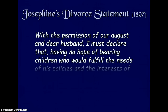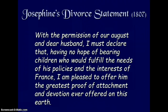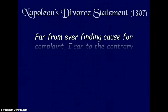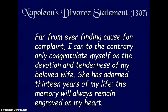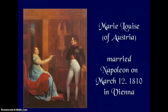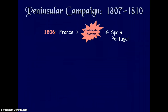Josephine's divorce statement read: 'Having no hope of bearing children to fulfill the needs of his policies and the interests of France, I am pleased to offer him the greatest proof of attachment and devotion ever offered on this earth.' Napoleon responded that she had adorned 13 years of his life and that her memory would always remain engraved on his heart. Napoleon then married Marie-Louise of Austria on March 12, 1810, in Vienna, and they had a son.